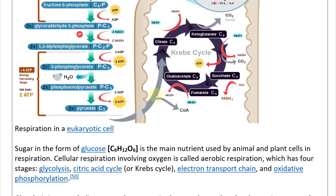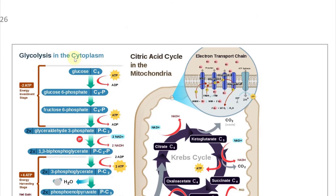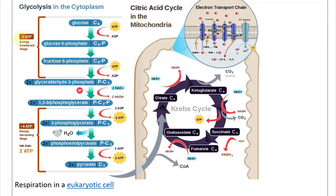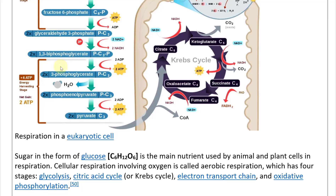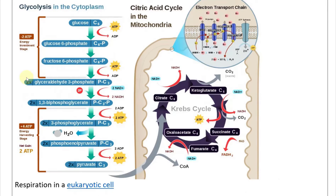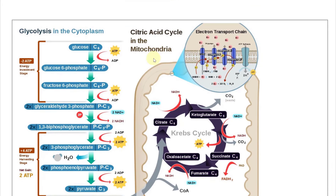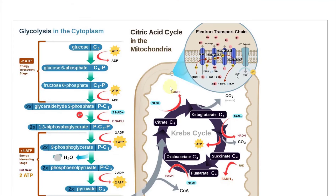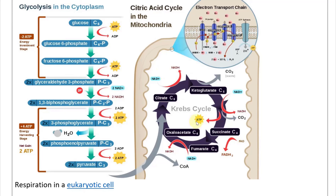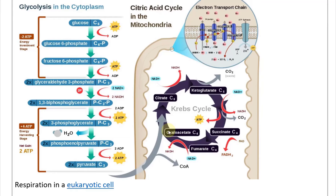Here is an overview of respiration in a eukaryotic cell. We have glycolysis in the cytoplasm, which involves a two-ATP energy investment stage, followed by an energy harvesting stage where you gain four ATP — so a net gain of two ATP. Then it goes through the citric acid cycle in the mitochondria, involving an electron transport chain on the lipid bilayer, a cycle that involves gaining ATP and releasing CO2 as waste.